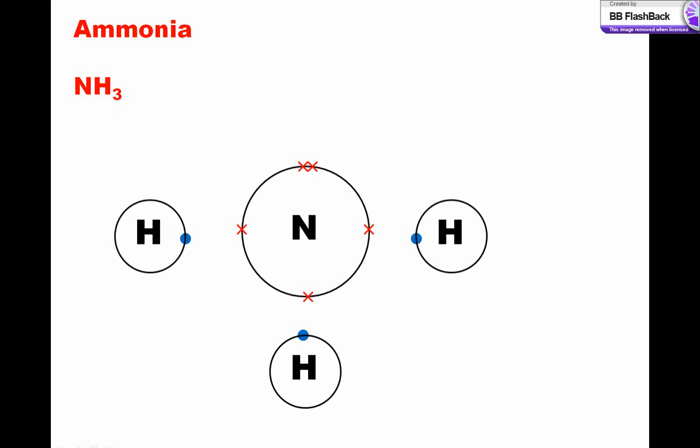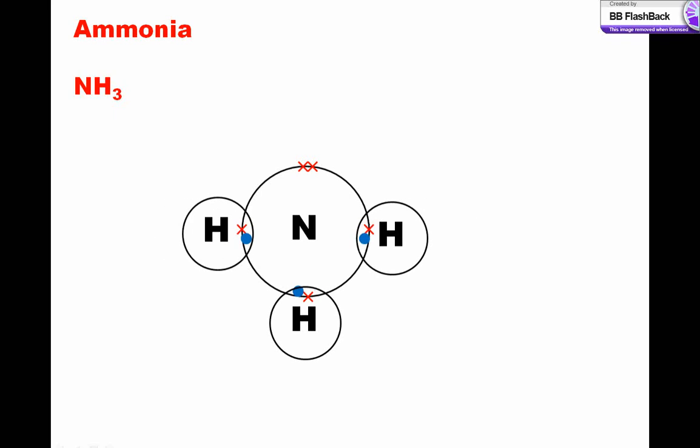Now let's look at ammonia, NH3. Ammonia has 5 electrons in the outer shell, and will form 3 covalent bonds with hydrogen as follows. The arrangement here is different to the previous example of methane, in that there are 3 pairs of bonding electrons, and a lone pair of non-bonding electrons.